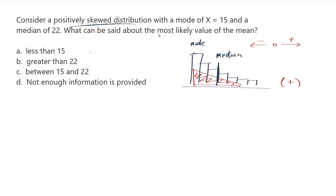What can be said about the most likely value of the mean? Well, the mean is the one that gets pulled the most towards where the pointy part of the skew is. So we can expect the mean to be up ahead somewhere, ahead of the median, which is 22. So we're expecting greater than 22. So our answer is B.